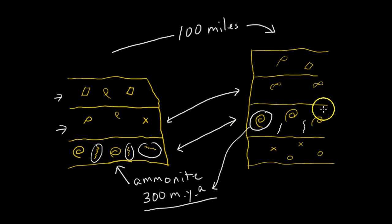It gives us information about the layer and the fossils around it because we know about that index fossil. It kind of gives us a label that we can put onto a section of time. And again, it gives us a relative age. It's not going to give us an absolute age of the fossils around it, but it gives us an idea. Hope it was understandable. Hope it helped you out. Thanks for watching.